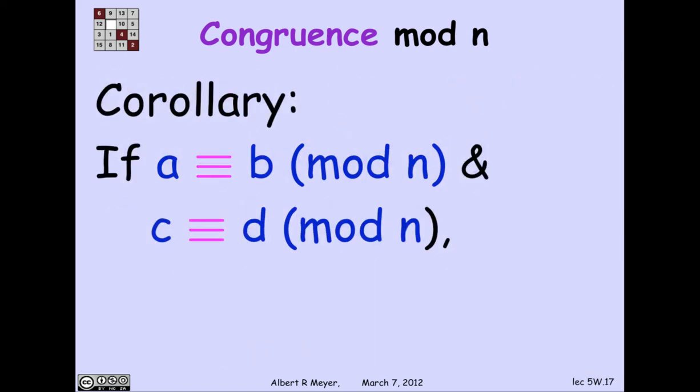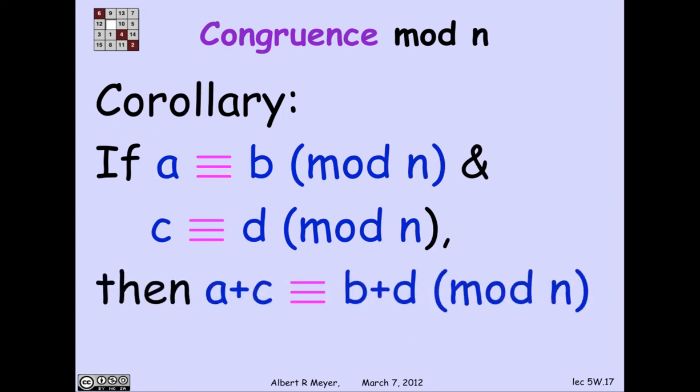It's a small step that I'm going to omit to go from adding the same constant to both sides to adding any two congruent numbers to the same side. So if a is congruent to b and c is congruent to d, then in fact, a plus c is congruent to b plus d.